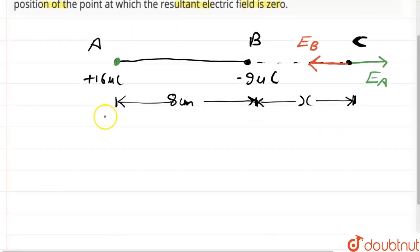Since their directions are opposite, their magnitudes should be equal. So we can write E_B = E_A.